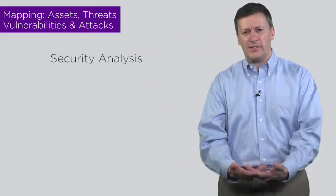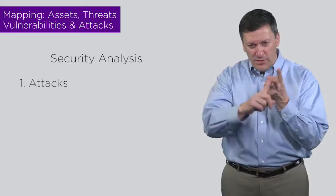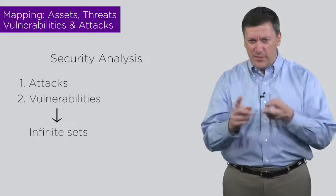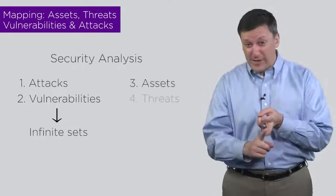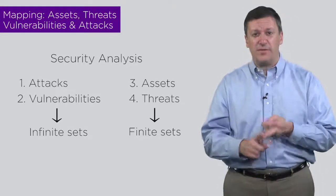The reason is that the number of possible attacks to anything is infinite. So if you're trying to do security analysis and understand the security of a system, the two places you're going to have trouble are attacks and vulnerabilities — because both sets are infinite. We like grounding ourselves in assets and threats because those are finite sets. When we get into attacks and vulnerabilities, they're infinite.